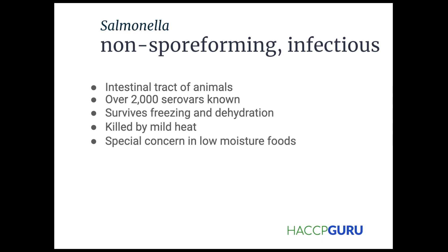Salmonella is non-spore-forming and infectious. It's found in the intestinal tract of animals — over 2,000 serovars. It survives freezing and dehydration, but it gets killed by mild heat, so some heat is going to kill it, which is a good thing.